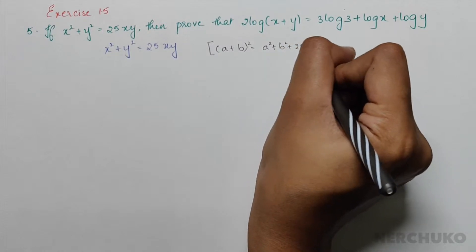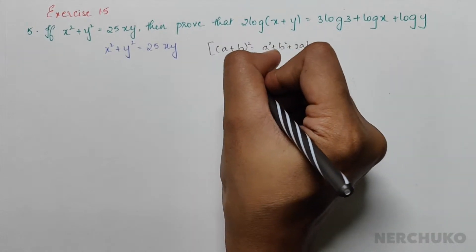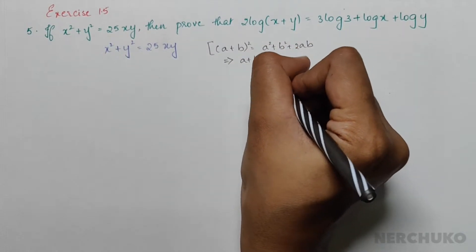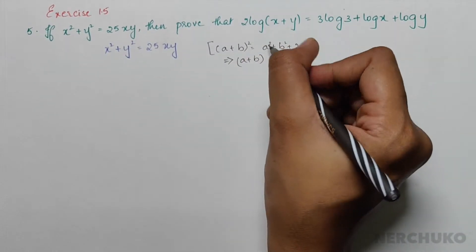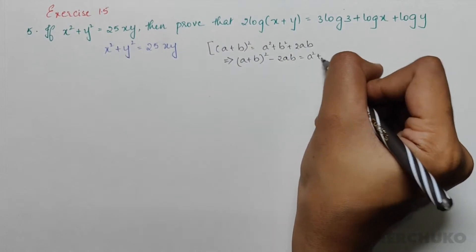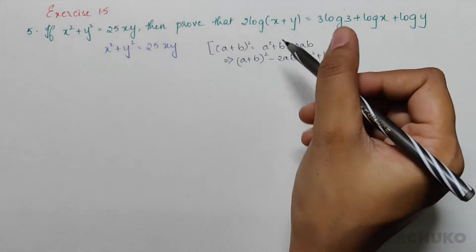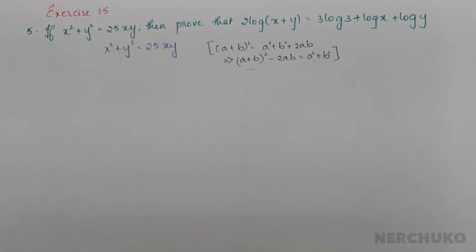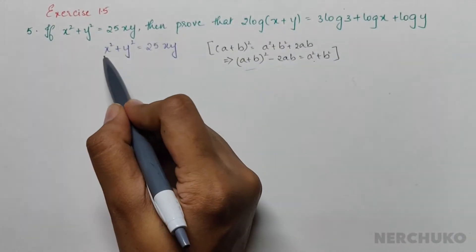When I rearrange the equation, I would have (a+b)² - 2ab = a² + b². Now applying this to our equation, since we have x² + y², it could be written as (x+y)² - 2xy.